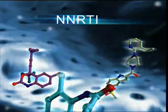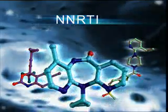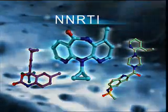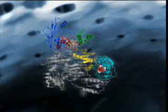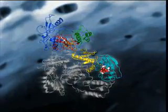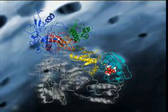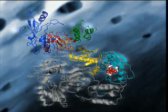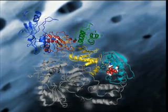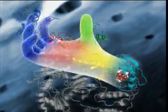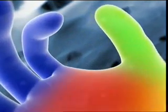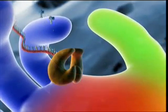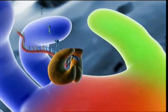The non-nucleoside reverse transcriptase inhibitors, NNRTIs, form another class of powerful antiretroviral agents. They inhibit reverse transcriptase by reducing its conformational flexibility. The thumb region of reverse transcriptase is flexible — it opens and closes like a hand. Only the closed position allows transcription of RNA.